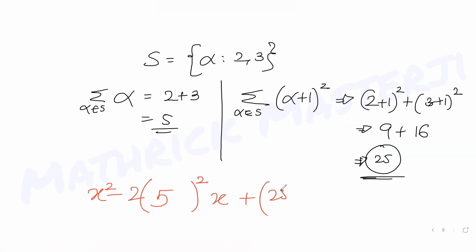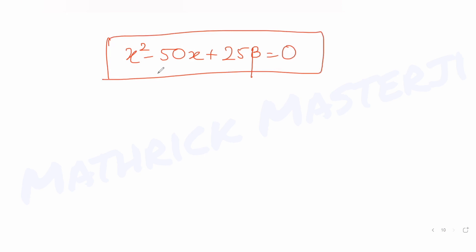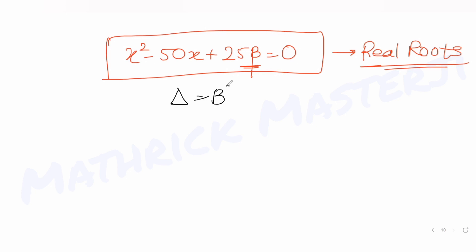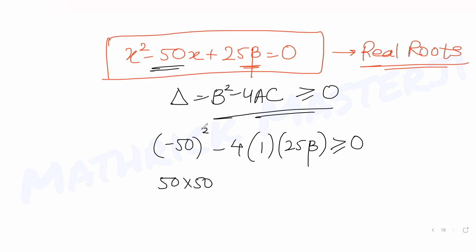So the quadratic equation is x² − 50x + 25β = 0. Since we need this equation to have real roots, the discriminant must satisfy b² − 4ac ≥ 0. Here b = −50, a = 1, c = 25β, giving (−50)² − 4·1·25β ≥ 0.